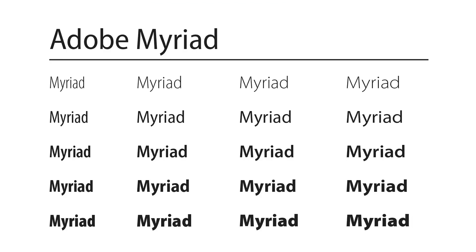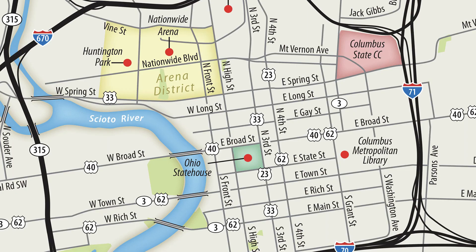Adobe Myriad is a good choice for maps, especially if you're looking for a slightly more casual feel. It comes in a huge range of weights and widths, and the condensed fonts are good for maps. It also has semi-condensed and semi-extended versions. And here it is on some maps.